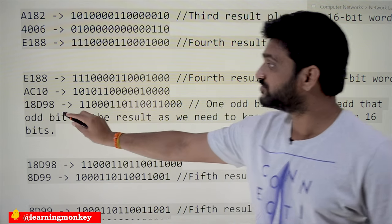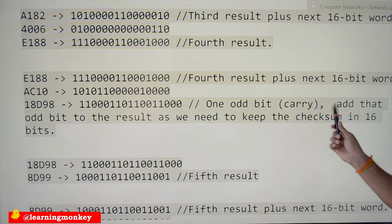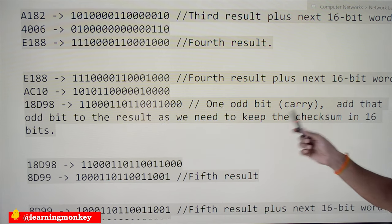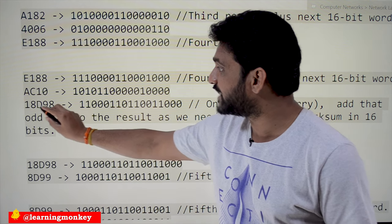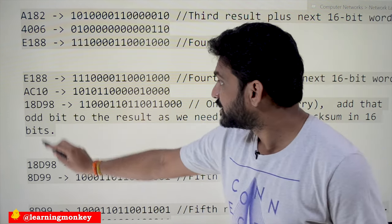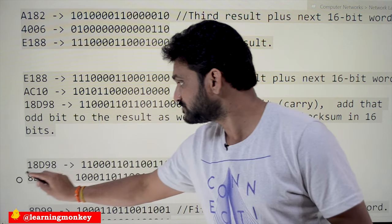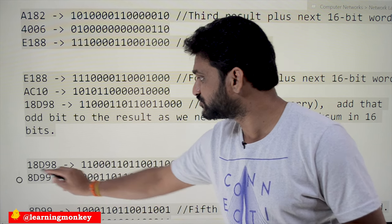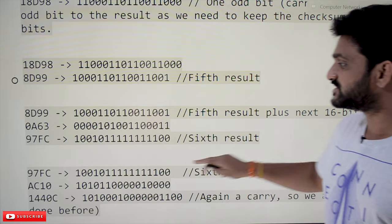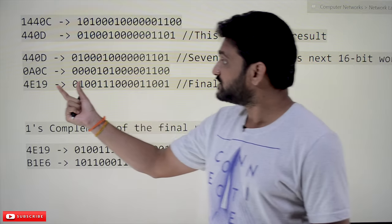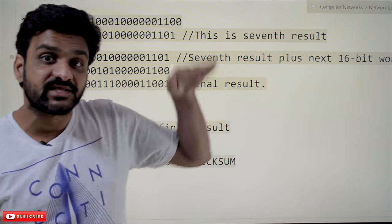At one point during the summation we get an extra carry bit beyond 16 bits. We bring that carry bit down and add it back to the 16-bit result — this is called end-around carry. For example, '8' plus '1' (carry) gives '9', resulting in '8D99'. This result is then summed with the next 16-bit piece. Continuing this process through all groups, the final result of the sum of all 16-bit groups of the IPv4 header is '4E19'.